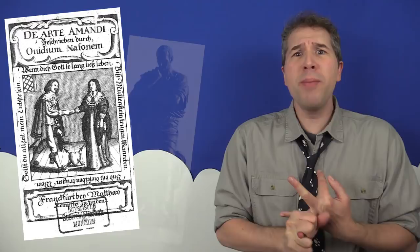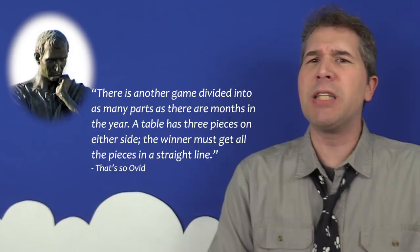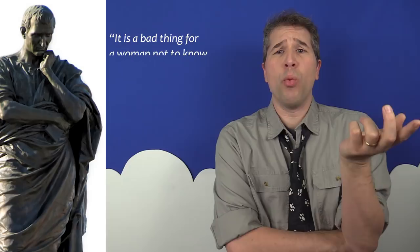There is another game divided into as many parts as there are months in the year. A table has three pieces on either side. The winner must get all the pieces in a straight line. Ovid then went on to postulate, quote, It is a bad thing for a woman not to know how to play, for love often comes into being during play.